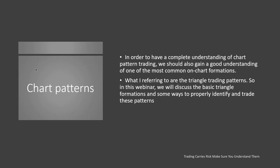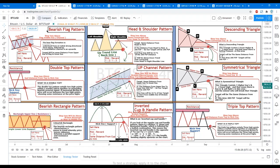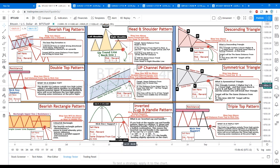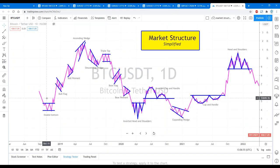I trade and I fully believe in triangles. There are hundreds of patterns out there — head and shoulders, bear flags, double tops, double bottoms, channel up, symmetrical and triple top patterns, inverted cup and handle, bearish rectangle patterns. I ignore 90% of what I just said. We can see all of these things occur in our standard trading on a chart.